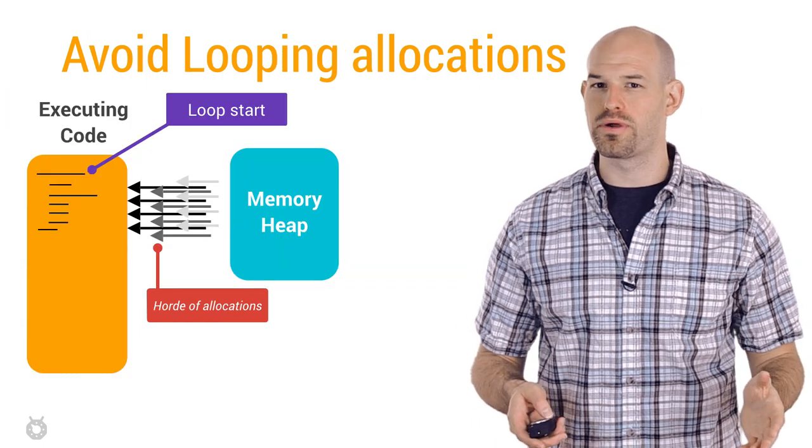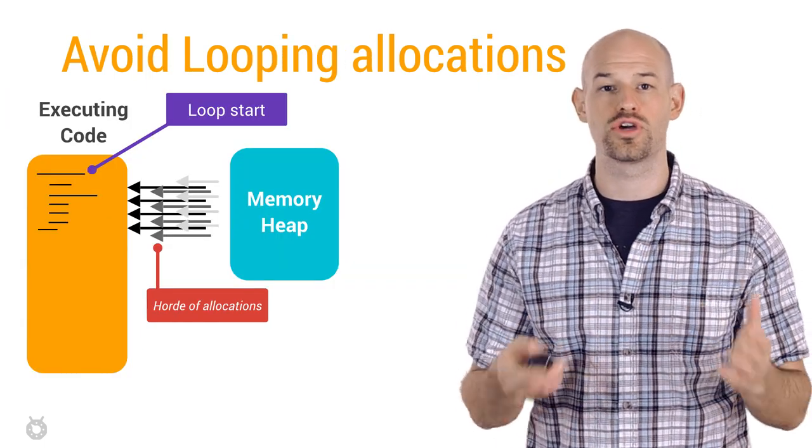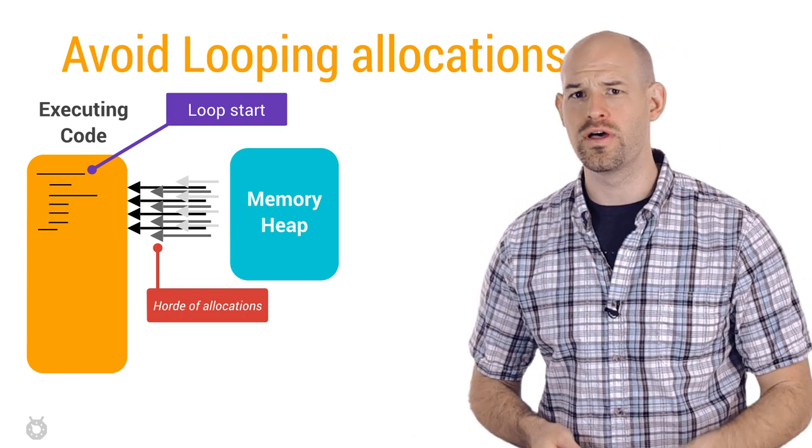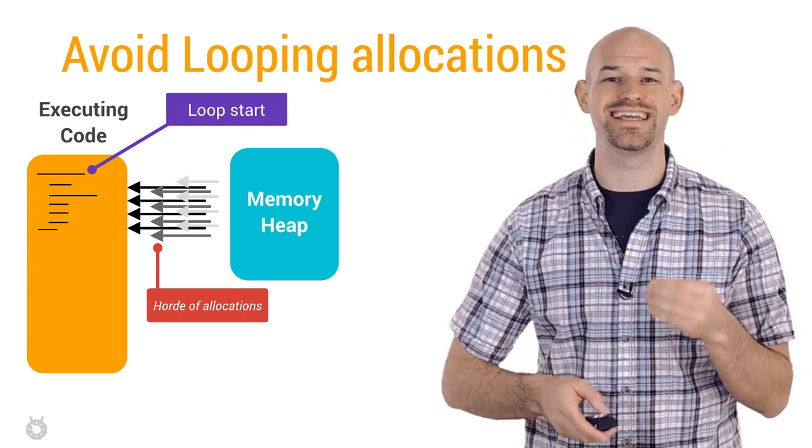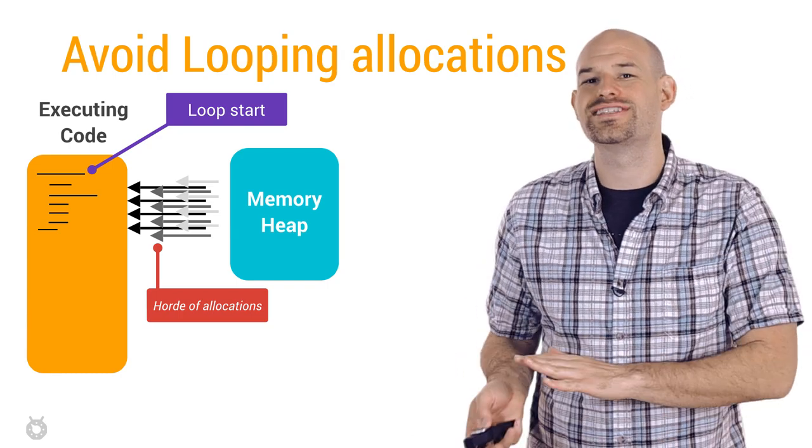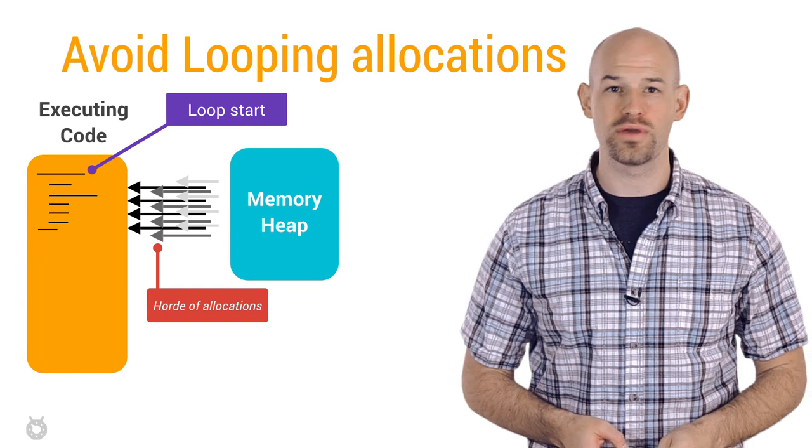And once you've identified the culprit, it's time to start moving around your code to fix the problem, which itself is also pretty straightforward. For example, make sure that you're not allocating objects in inner loops for obvious reasons. Try to push those allocations outside of the loop or avoid them entirely if you can.